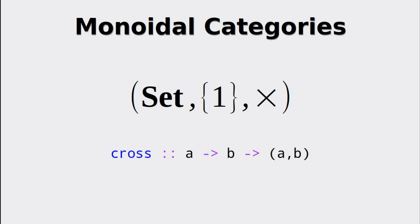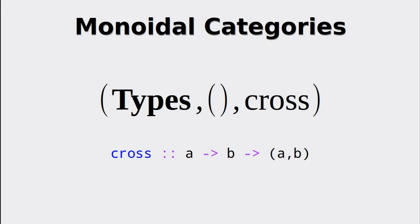The full definition for the monoidal category looks like this. The category is the category of sets, the identity element is any fixed set with one element, and the tensor product is given by the cross product. Depending on whether the set was on the left or the right side of the cross product, we can use lambda or rho to filter the element and reverse the cross product, thus restoring the old set. Interestingly, using this function together with the internal types of Haskell and the empty tuple as the identity element gives us another monoidal category, given by the internal function of Haskell for building tuples.